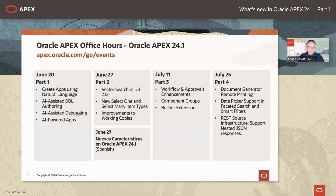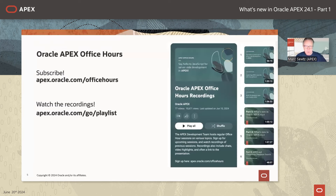We're going to have four or five APEX Office Hours on 24.1. The first one today covers a general overview and new AI features. Next week: vector search, new component types, select one and select many, improvements to working copies, and the Spanish APEX Office Hours on 24.1. We take a break July 4th, then July 11th covers workflow and approval enhancements, component groups, and builder extensions. July 25th covers new PDF printing capabilities, date picker support, and changes to REST data sources.